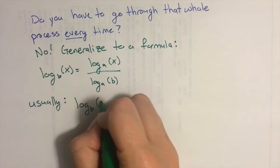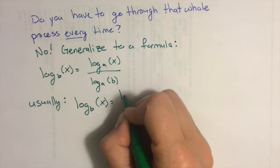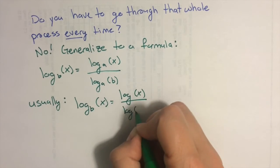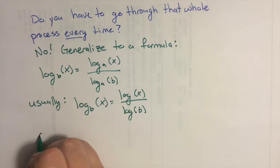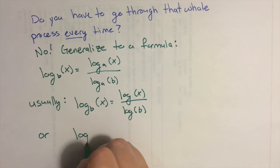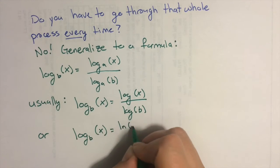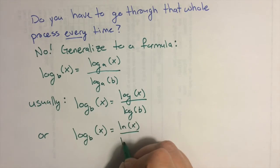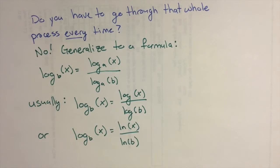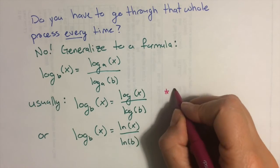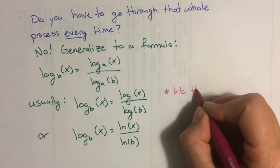Usually, instead of using log base a, we use log base 10, the common log, or log base e, the natural log, because those are logarithms that we can easily evaluate on our calculator.